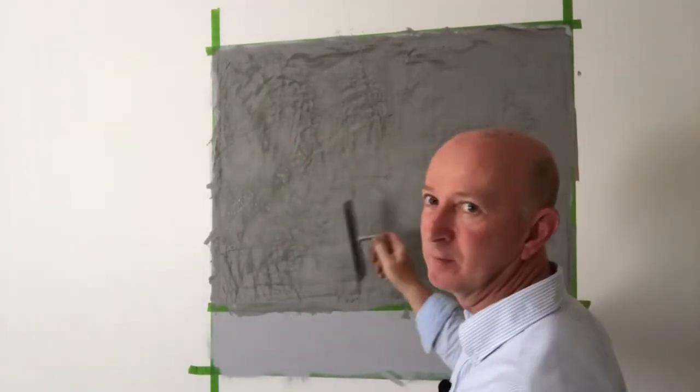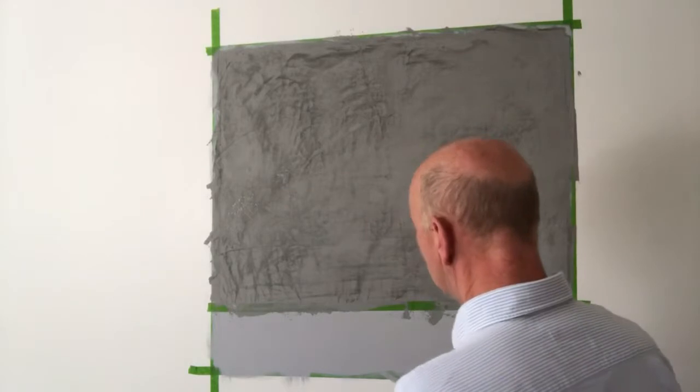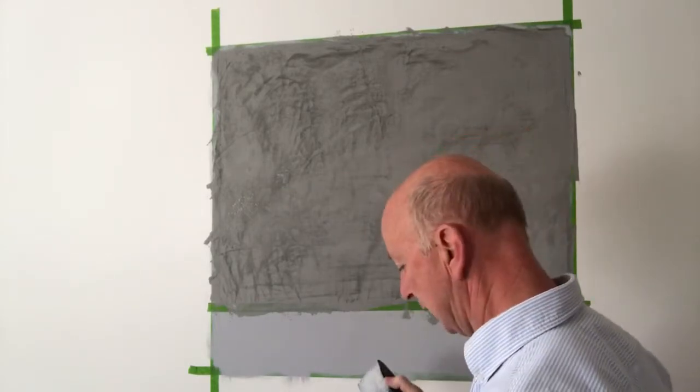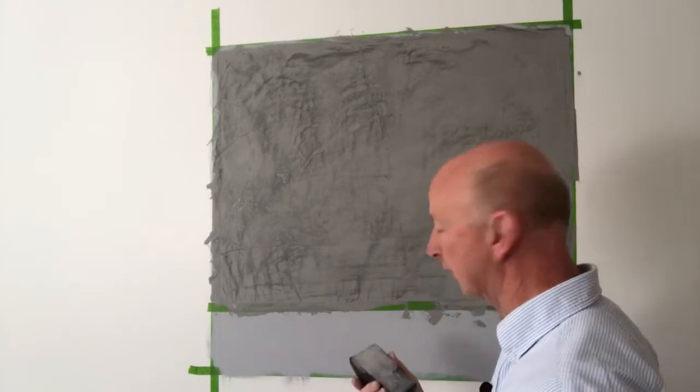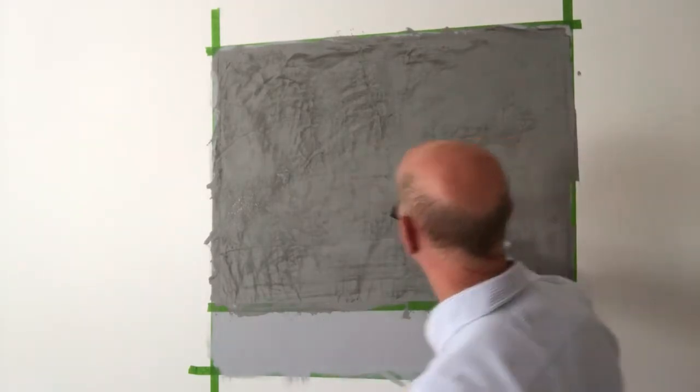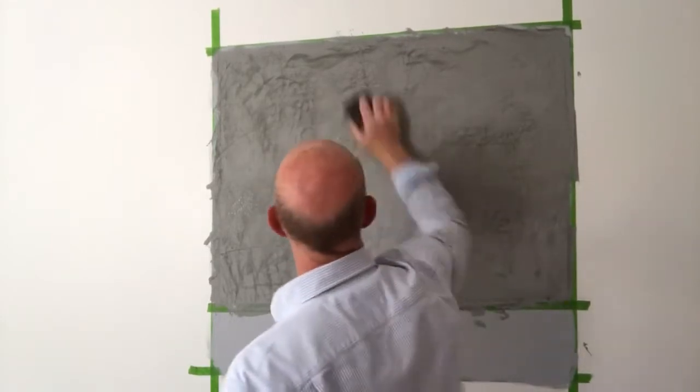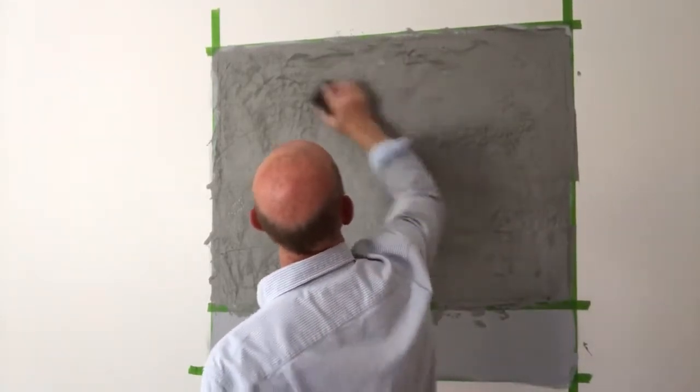We can also sand it. So we're using 600 grit paper. If you're not happy, you want to smooth it down a little bit, you can actually sand away.